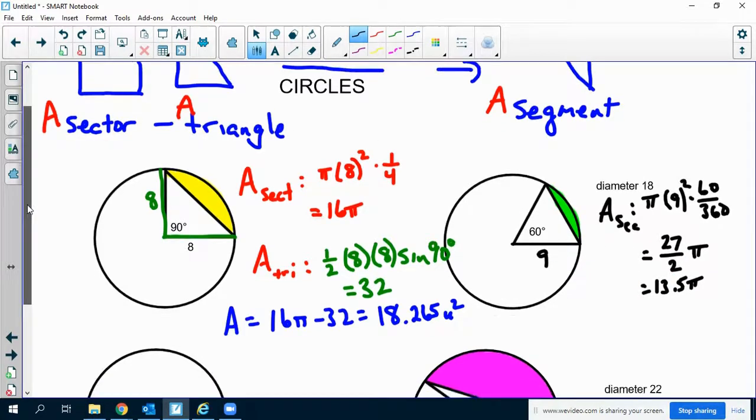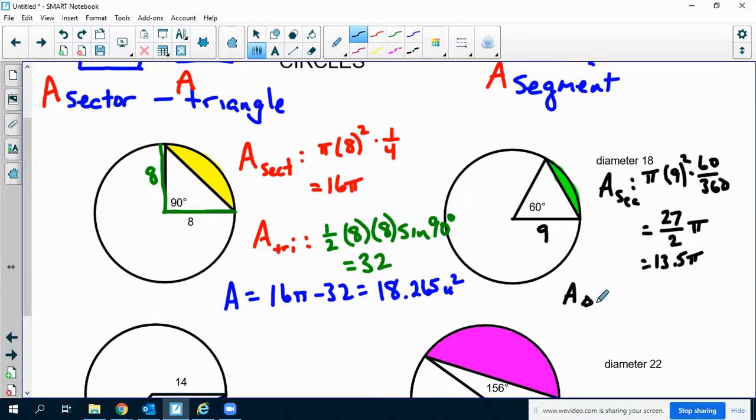Now, the area of this triangle is going to be 1/2 times 9. Notice that this side will be also 9 times the sine of 60. And that formula is something that we talked about a little bit, especially when we were dealing with the area of a regular polygon. So we have 1/2 times 9² times the sine of 60, and this is going to be about 35.074.